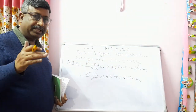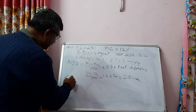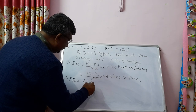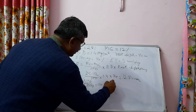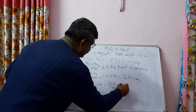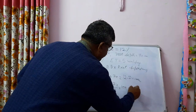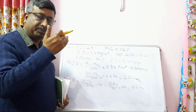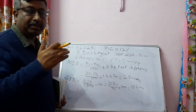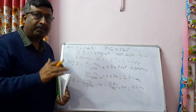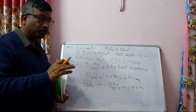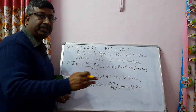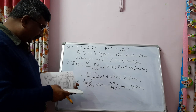For gross irrigation requirement: GIR = NIR / irrigation efficiency × 100 = 12.74 / 70 × 100 = 18.2 cm. This means that to deliver 12.74 cm at the field, we must release 18.2 cm from the source, because 30% is lost in conveyance — irrigation efficiency is 70%.